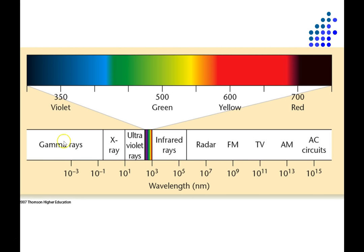Light itself is just a narrow band within the broader electromagnetic spectrum. This is showing you the full electromagnetic spectrum plotted in terms of its wavelength in nanometers. So these are very, very small wavelengths.